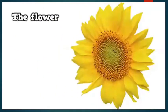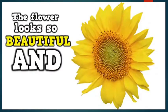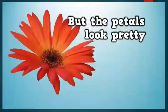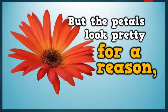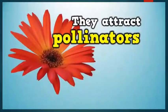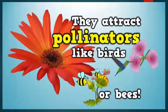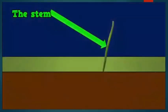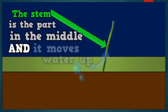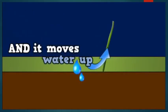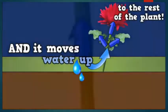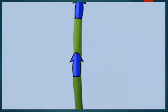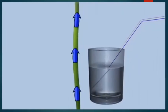The flower looks so beautiful and it makes the seeds that start a new plant. But the petals look pretty for a reason — they attract pollinators like birds or bees. The stem is the part in the middle and it moves water up to the rest of the plant. Through the stem that water flows — it's like a straw.